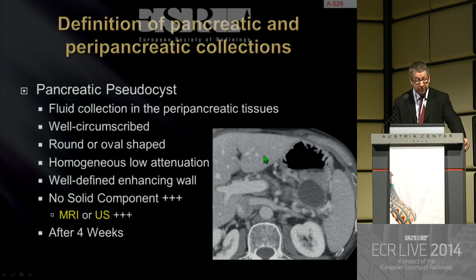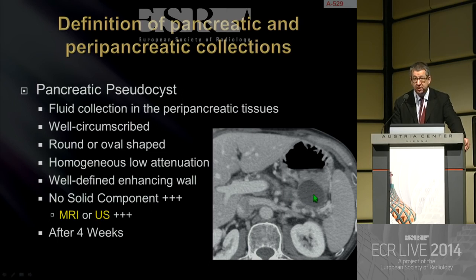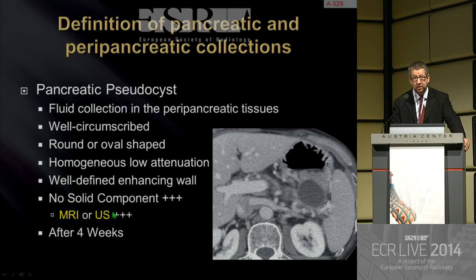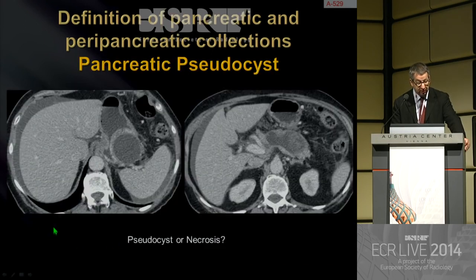Pancreatic pseudocysts are defined as fluid collections in the peripancreatic tissues with a well-circumscribed appearance. They are round or oval-shaped with homogeneous low attenuation and a well-defined enhancing wall. There is no solid component. CT is not the best examination to confirm the absence of solid component; MRI or ultrasound are by far much more accurate in detecting solid components in a fluid-like collection at CT. The term pancreatic pseudocyst should be used only after four weeks of evolution.